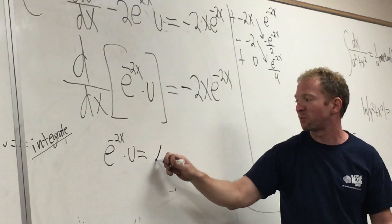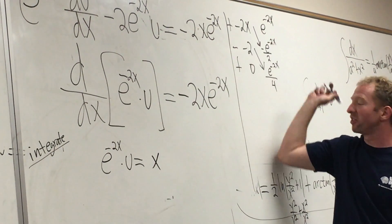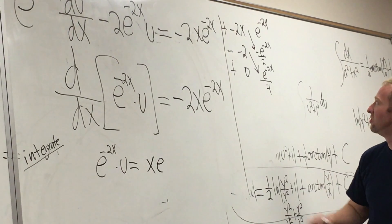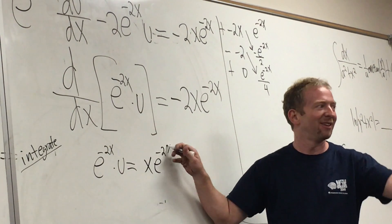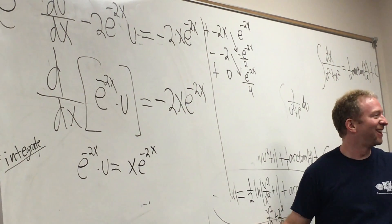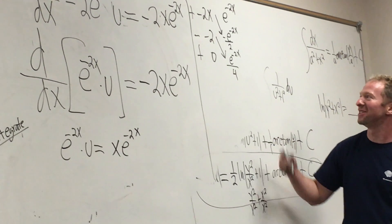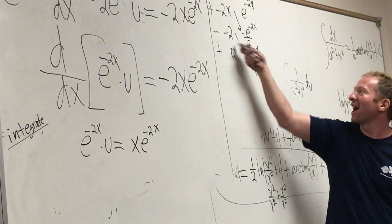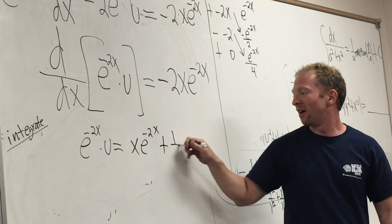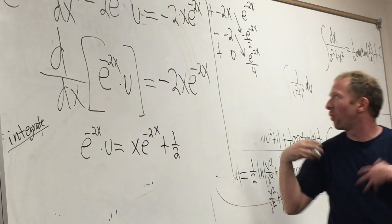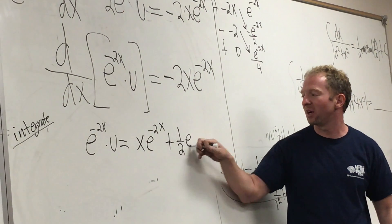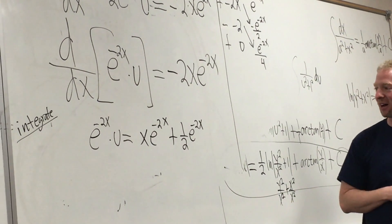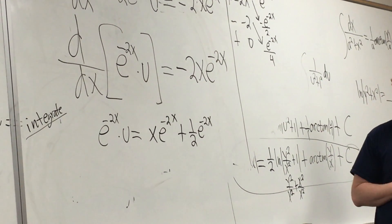So the right side works out to: x · e^(-2x) · (1/2) — wait, this is e^(-2x). And the result gives us: x · e^(-2x) · (1/2) plus e^(-2x) · (1/2), all from the tabular method, plus C.